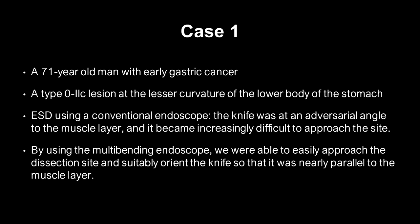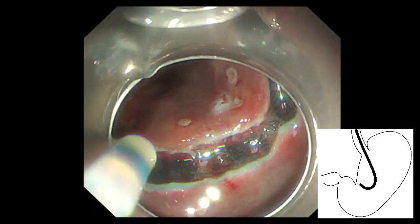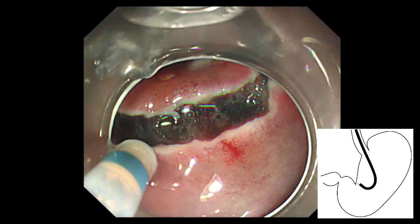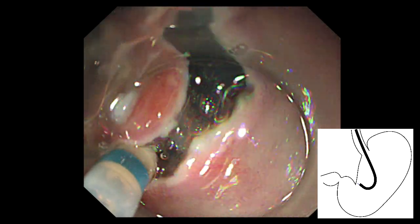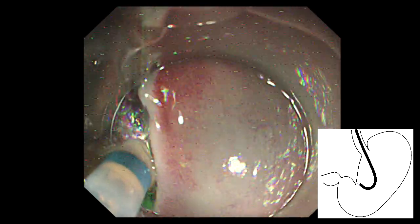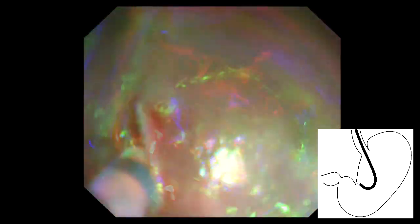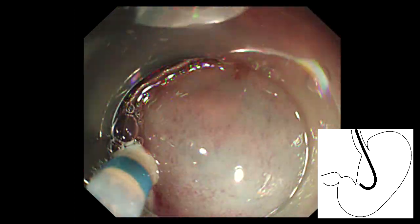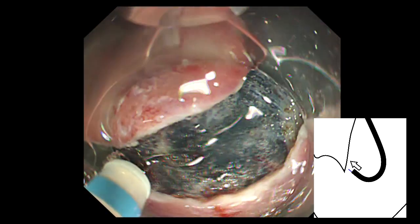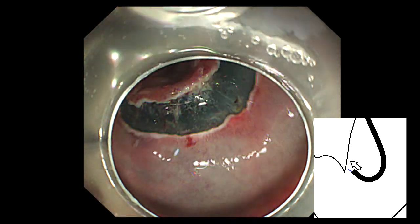Case 1. A 71-year-old man with early gastric cancer — a type O2C lesion at the lesser curvature of the lower body of the stomach. Initially, we used a conventional endoscope and made an approximate semicircular cut on the distal side. After that, we attempted dissection. However, the knife was at an adversarial angle to the muscle layer after approaching the site, presenting a high risk for muscle layer damage.